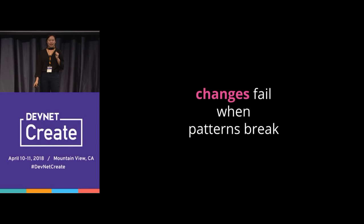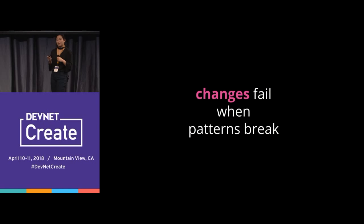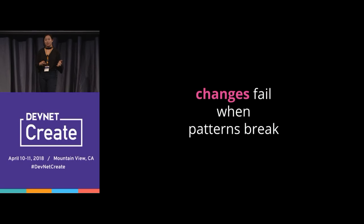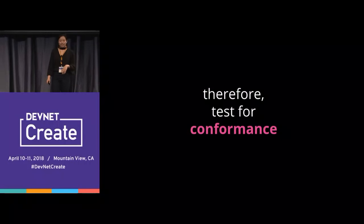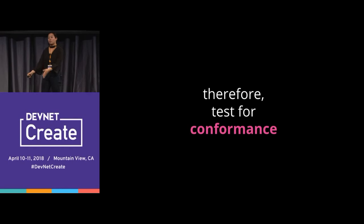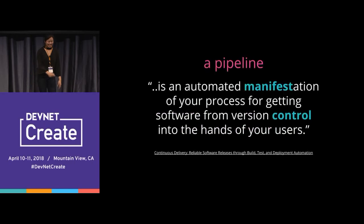Your CICD is supposed to detect when changes fail. Changes fail because your patterns break — for example, if someone coded in a static IP and they're not supposed to, when you make a network change that static IP will affect the outcome. So you need to test for conformance: test to make sure those patterns are not broken in the first place. That's why you need a pipeline, because there are a lot of tests, and now I'm adding one more — the conformance test.